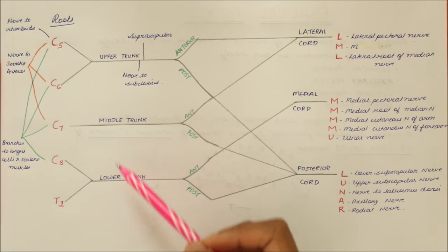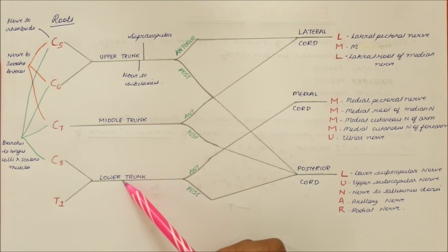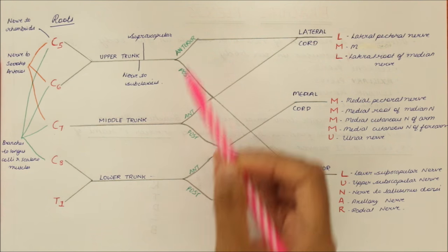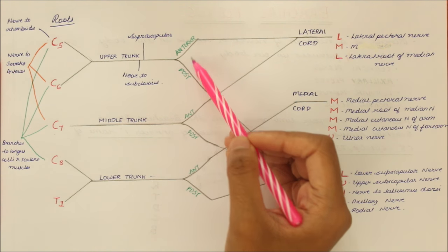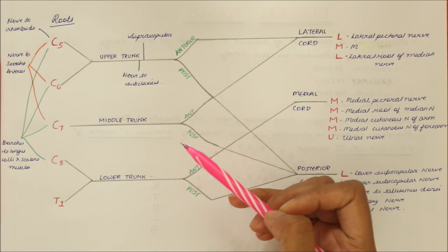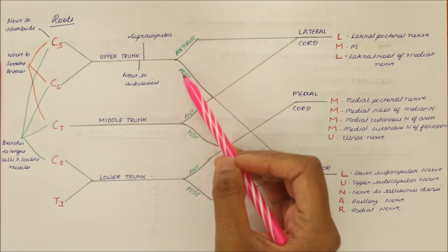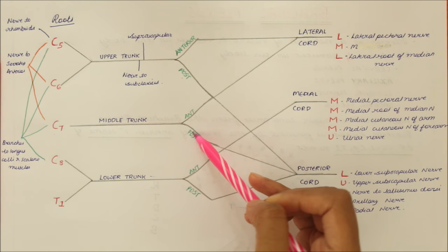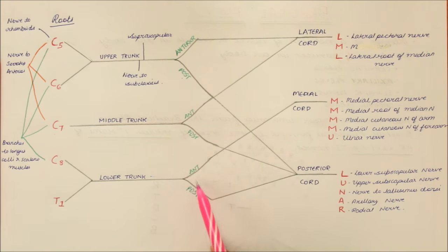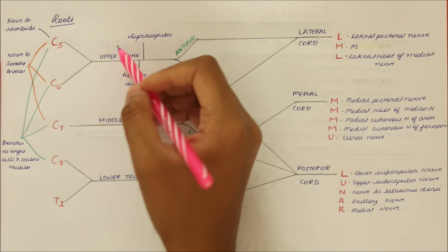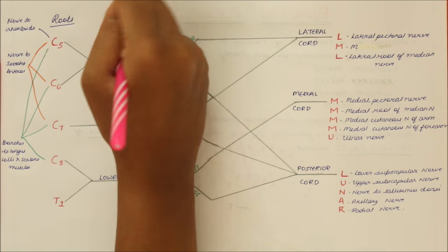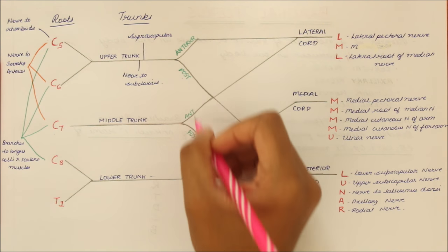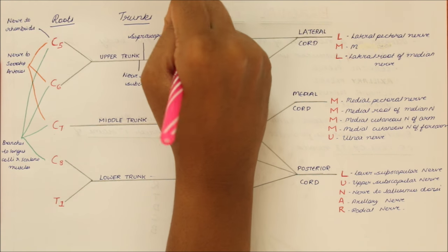These are the 3 trunks: the upper, middle and the lower trunk. Moving on, these trunks divide into anterior and posterior divisions. The upper trunk has anterior and posterior divisions, the middle has anterior and posterior divisions, as does the lower trunk with anterior and posterior divisions.